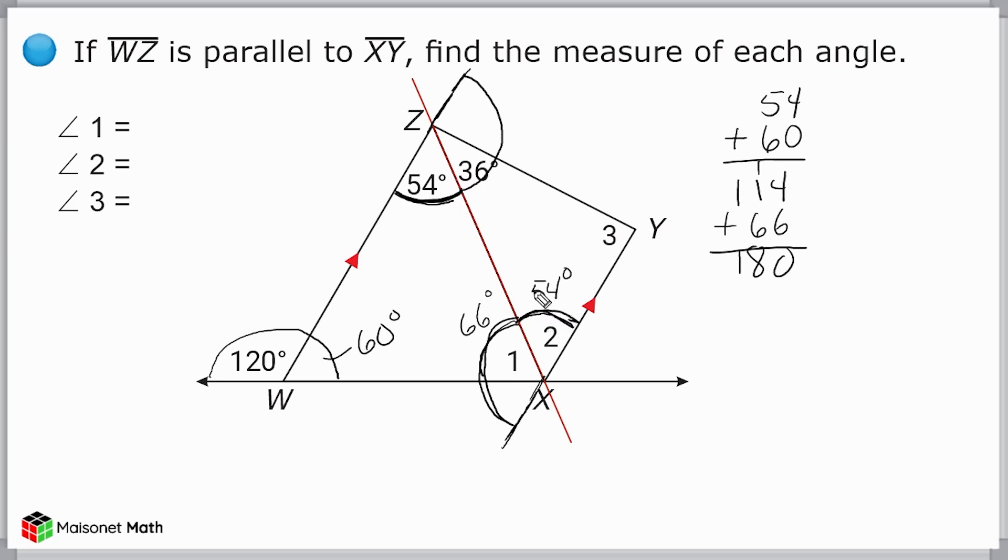Now that we know two of the three angles of this triangle, we can easily find the measure of angle 3. So we're going to take 36 degrees and 54 degrees and add those measures together, and that gives us 90 degrees, which means this angle must measure 90 degrees as well because together that is a sum of 180.